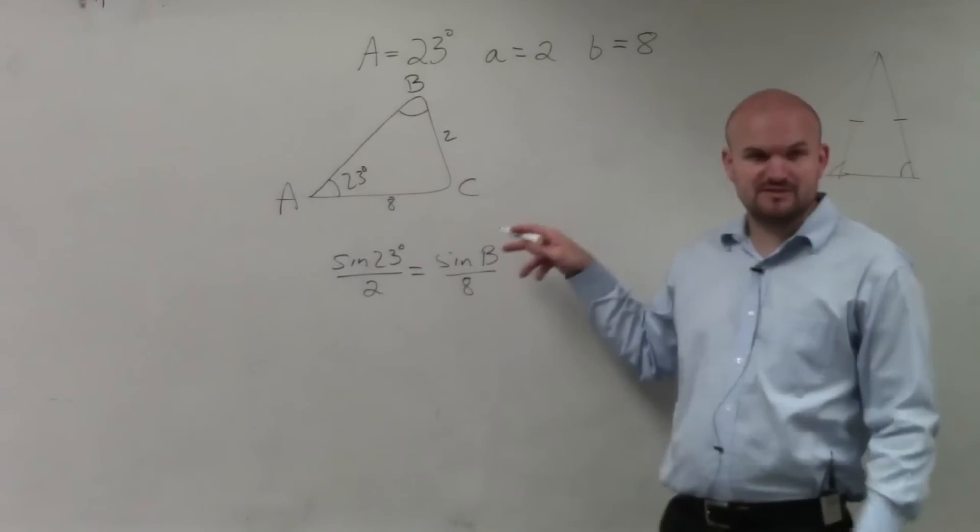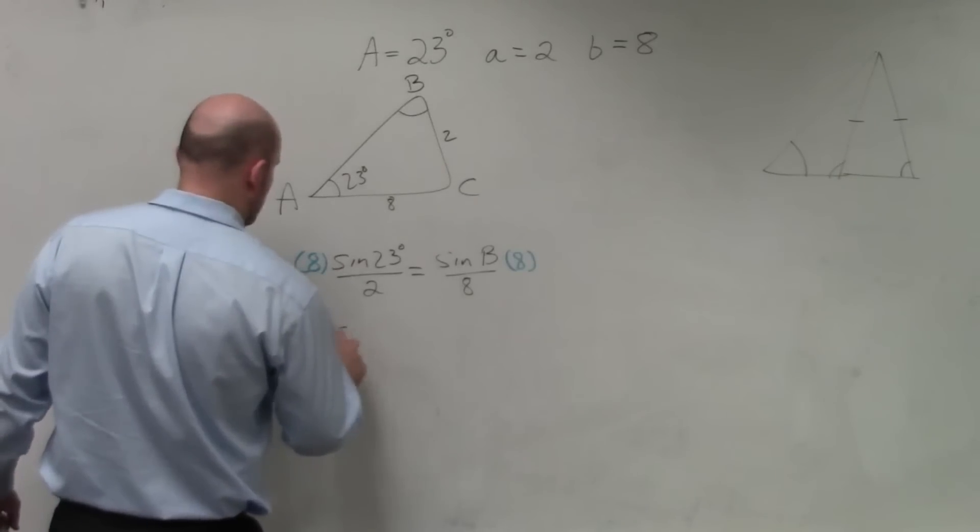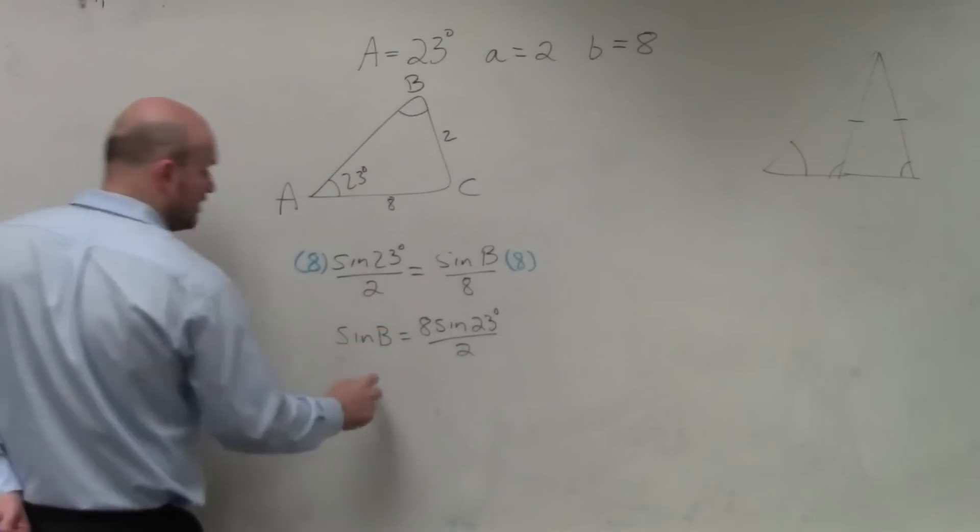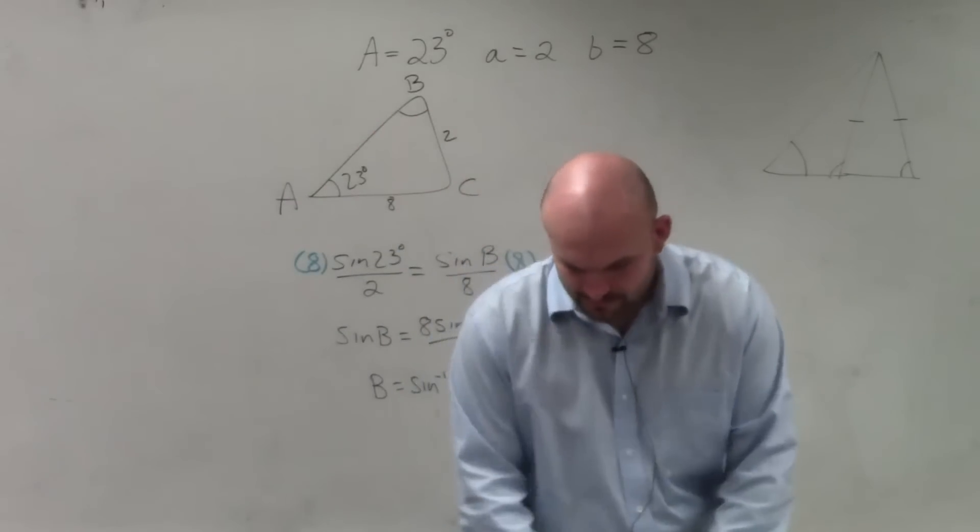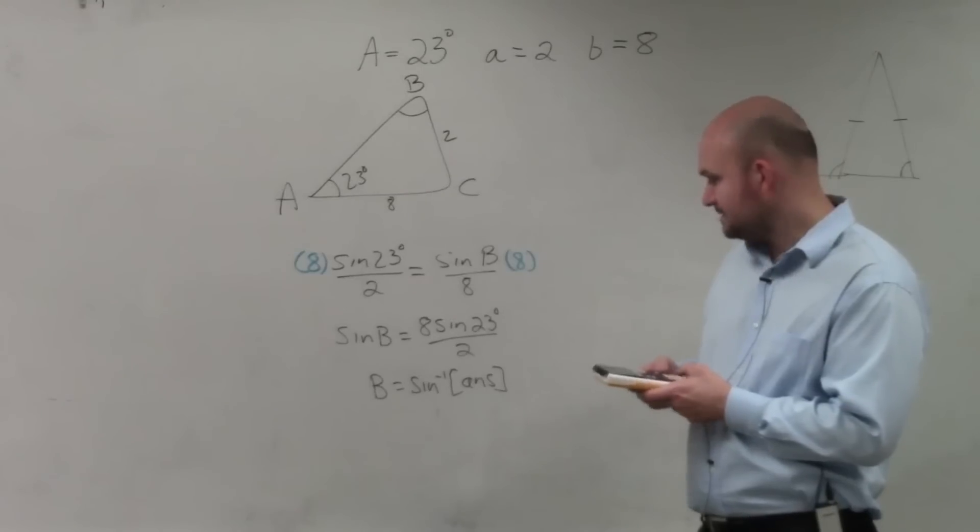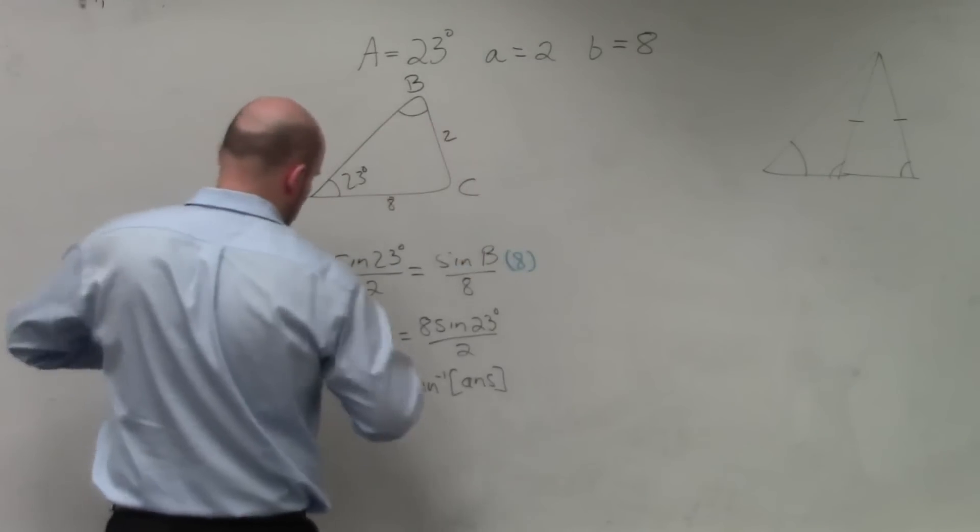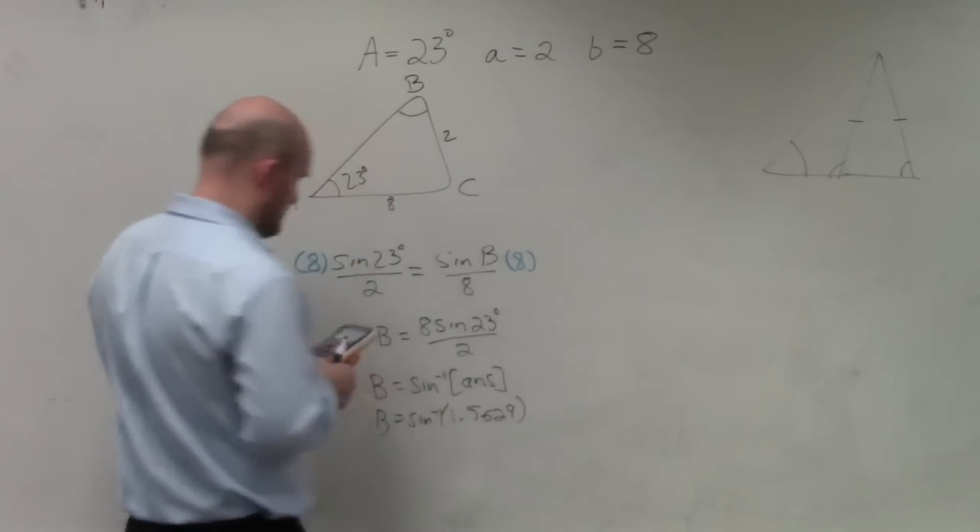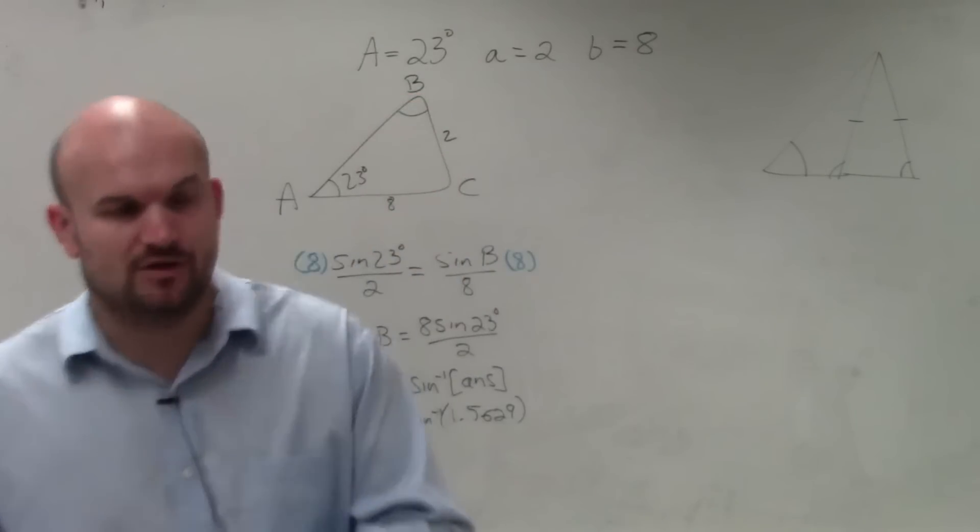And the reason why I like the angles to be in the numerator is because now to solve for sine of B, all I have to do is multiply by 8 on both sides. And I have sine of B equals 8 times the sine of 23 degrees all over 2. But we're not solving for sine of B. We're solving for B. So that's going to be sine inverse of that answer. So I go ahead and type in my calculator. I do 8 times the sine of 23 divided by 2. So now you're going to get 1.56. And then, ladies and gentlemen, if I do the sine inverse of that answer, I get an error domain. So that means no triangle can exist. There is no angle where we can set a triangle.